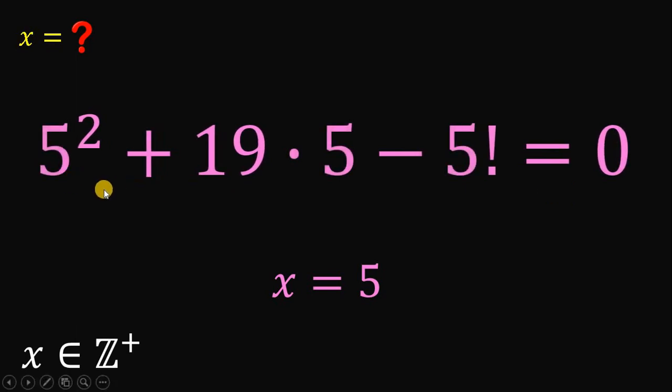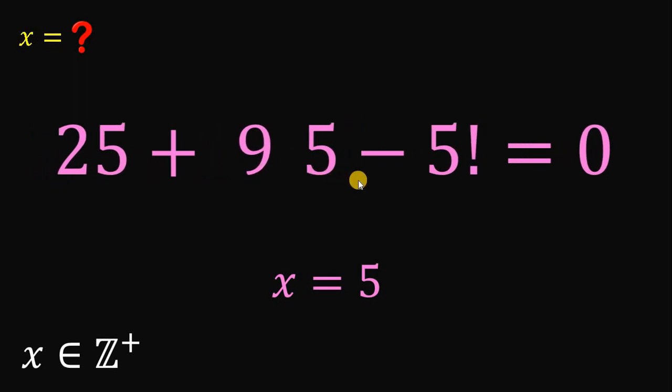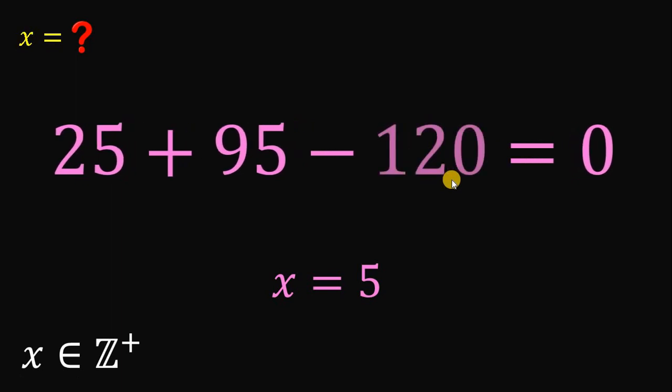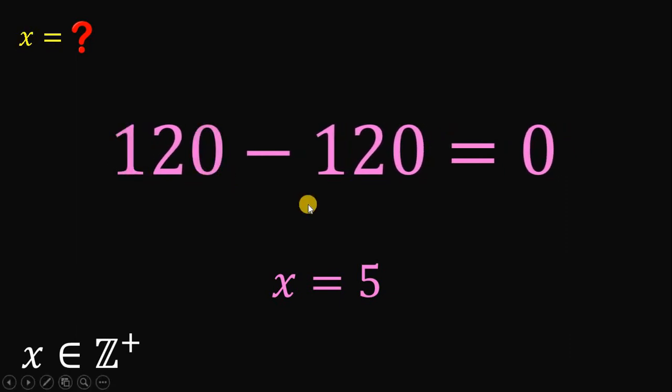5 squared is 25. 19 times 5 will give us 95. 5 factorial is 120. Now, 25 plus 95 is 120. Therefore, 120 minus 120 definitely equals 0. So our answer is correct.